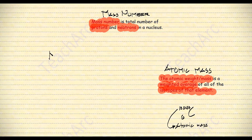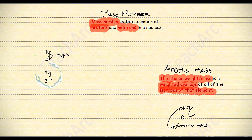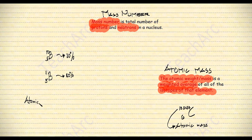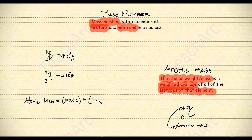The same idea applies to other elements like boron. Boron has two naturally occurring isotopes: boron-10 and boron-11. Boron-10 is 20% of all borons in the world, and boron-11 is 80%. Computing atomic mass: 10 times 0.2 plus 11 times 0.8 gives an atomic mass of 10.8 for boron.